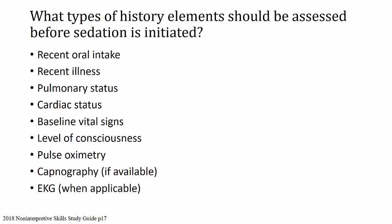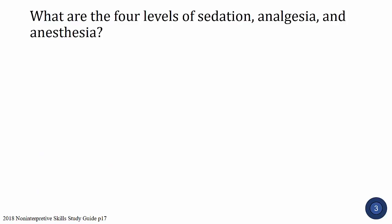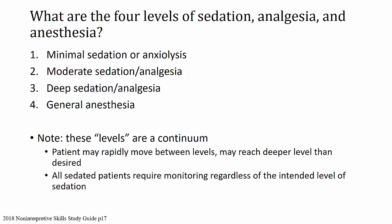Next question: what are the four levels of sedation, analgesia, and anesthesia? The four levels are level one, minimal sedation or anxiolysis; level two, moderate sedation or analgesia; level three, deep sedation and analgesia; and four, general anesthesia. It's important to note that these levels are a continuum, so a patient may rapidly move between levels — they may be at level two and then immediately at level three very quickly. All sedated patients require monitoring regardless of the intended level of sedation.